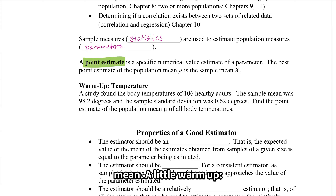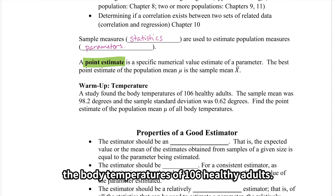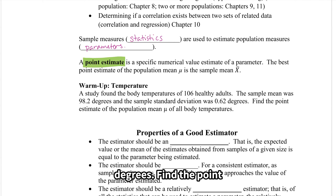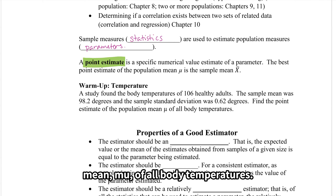A little warm-up: a study found the body temperatures of 106 healthy adults. The sample mean was 98.2 degrees and the sample standard deviation was 0.62 degrees. Find the point estimate of the population mean, mu, of all body temperatures.